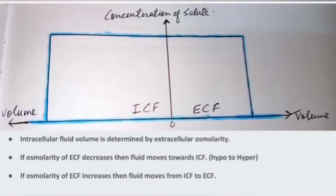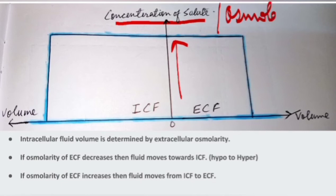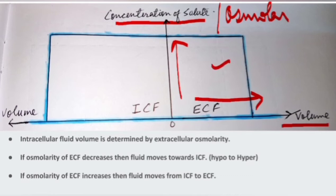This is the Darrow-Yannet diagram in the steady state. The Y-axis represents the concentration of solute or the osmolarity of the compartment, and the X-axis represents the volume of the compartments. In the steady state, the osmolarity of the extracellular fluid and the intracellular fluid are the same, so there is no movement of fluid between compartments.